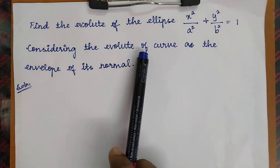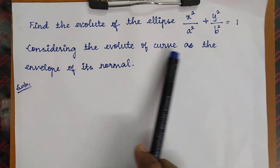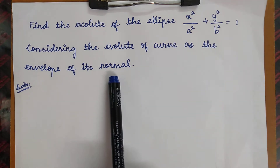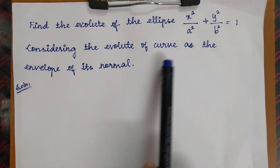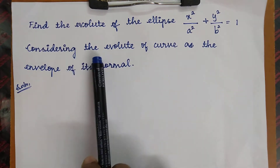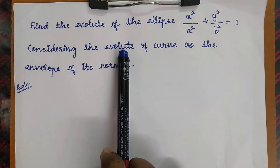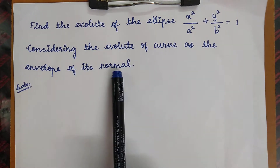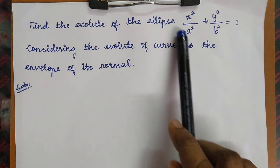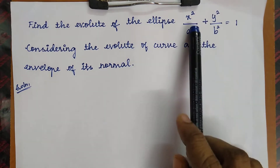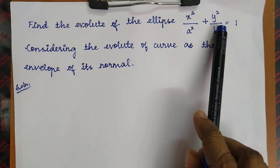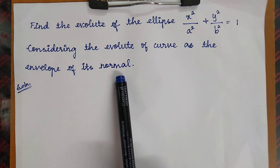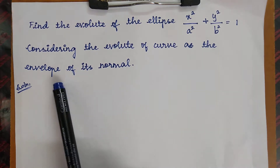We consider the evolute of a curve as the envelope of its normals. So we have to find the evolute, which is nothing but the envelope of the normal equation. For that, we first write the normal equation of the given curve, and then find its envelope.